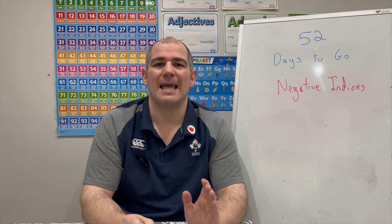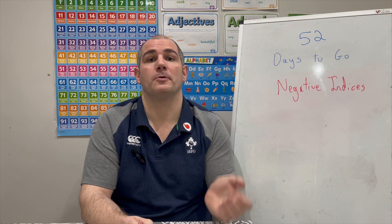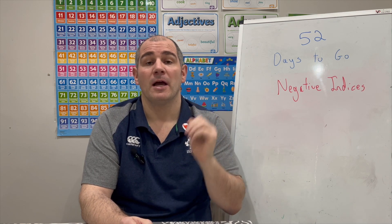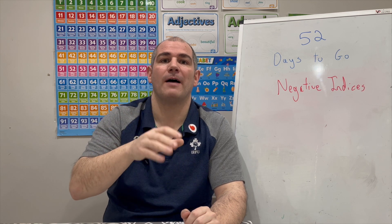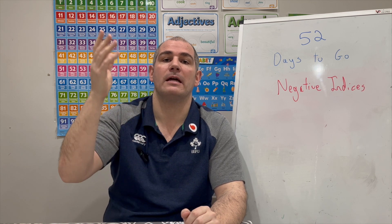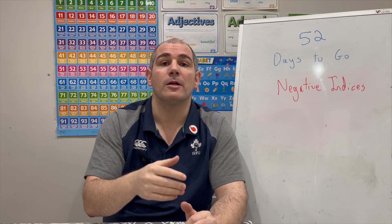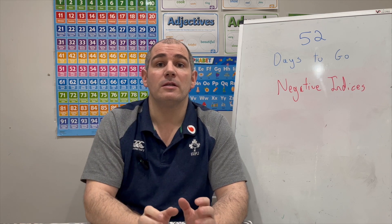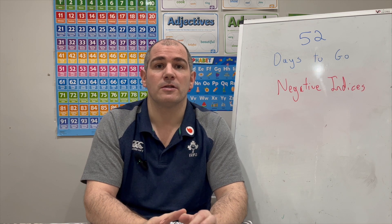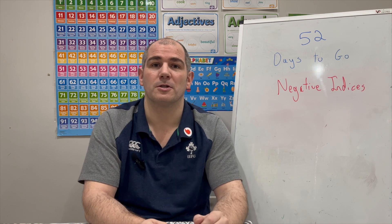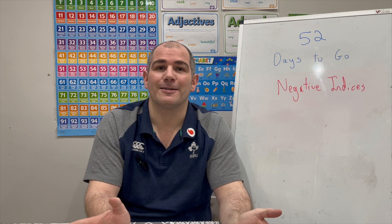Today we're going to be focused on the topic of negative indices. We've looked previously at square numbers, cube numbers and different indices. Now we're going to look at what happens whenever that power is negative — for instance, 5 to the power of negative 1, or 6 to the power of negative 2. We're also going to look at whenever the power is 0. There'll be lots of questions for you to try, so feel free to press pause and try those as you go through.